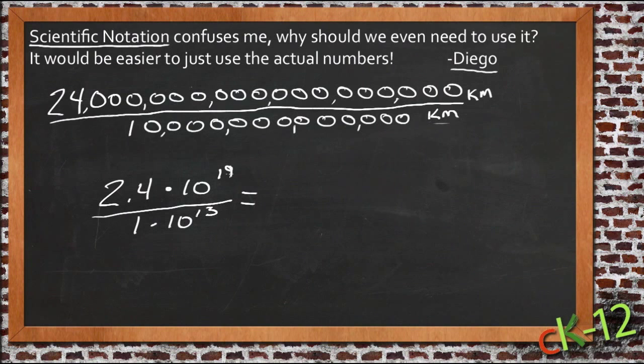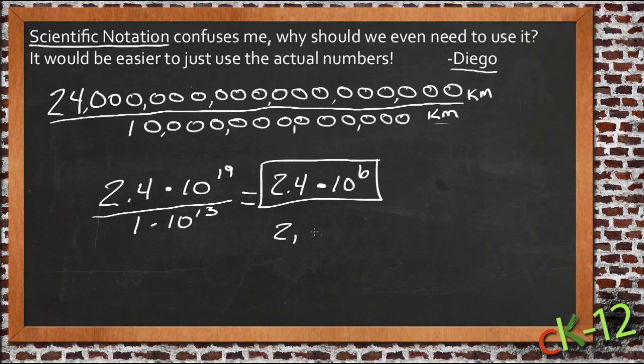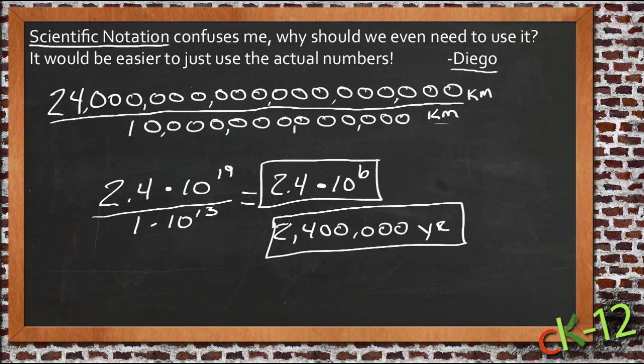And then instead of calculating and then writing out and then crossing out all these zeros, I just use my rules for powers. 19 minus 13 is 6, so my answer is going to be times 10 to the 6th, and 2.4 divided by 1 is 2.4, so my answer is 2.4 times 10 to the 6th. And I'm done. If I want to write that back out in longhand, I could say 2,400,000 is the number of years it would take to get to Andromeda if I was traveling at this speed of light.